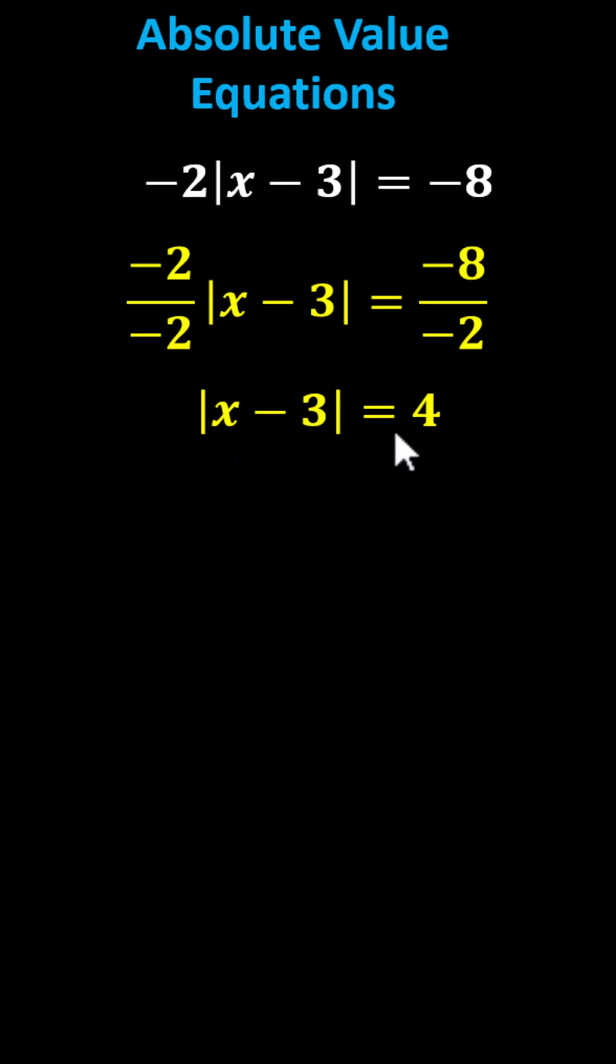Because we have the absolute value of the quantity x minus 3 equals 4, and the absolute value of positive 4 as well as the absolute value of negative 4 both equal 4, since both 4 and negative 4 are 4 units from 0, the expression inside the absolute value, x minus 3, can equal 4 or negative 4, indicating we will have two solutions.